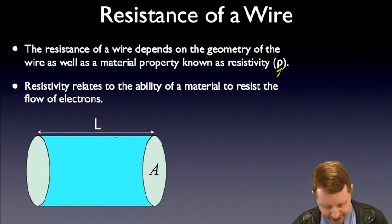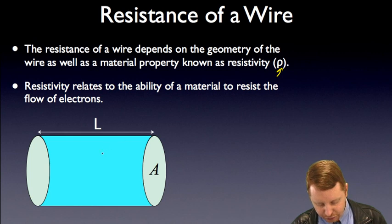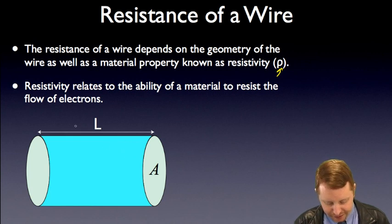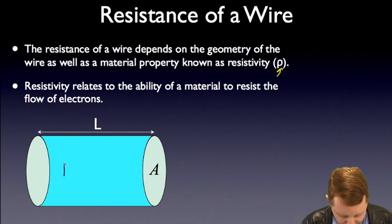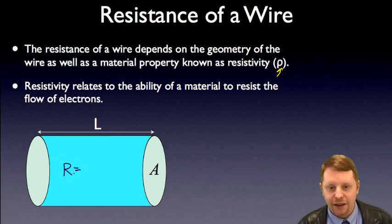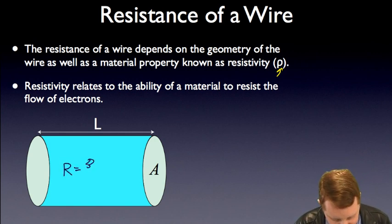And that relates to the ability of the material to resist the flow of electrons. So, if we take a look at something like a conductor or resistor here, it has some length L, some cross-sectional area A, then we could write that its resistance R is equal to the resistivity of the material, rho, times the length divided by the area.